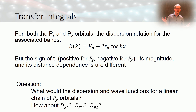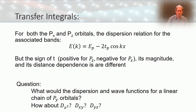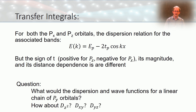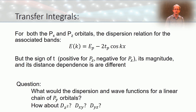A question to consider: what would the dispersion and wave functions for a linear chain of py orbitals look like — more like pz or px? And a harder question: for an atomic chain with only d orbitals, what would the dispersion look like for dz², dxy, or dyz orbitals? In the next video we'll extend the tight binding approximation in two ways: having multiple orbitals on a single atom, or having multiple atoms within a unit cell. Thanks for watching!